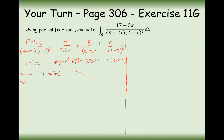The next thing is to make the (3 plus 2x) bracket equal 0, so we need x equals minus 3/2. Substituting minus 1.5 into both sides: the left-hand side gives 17 minus 5 times minus 1.5, which is 49/2. On the right-hand side, substituting into the A term gives (2 minus minus 1.5) squared, which is 49/4.